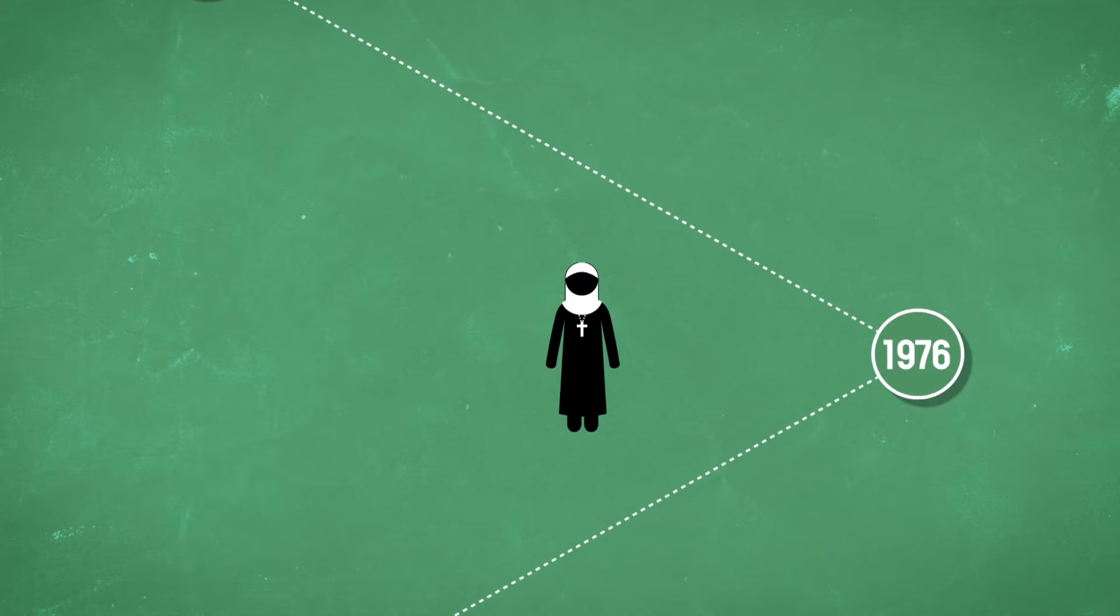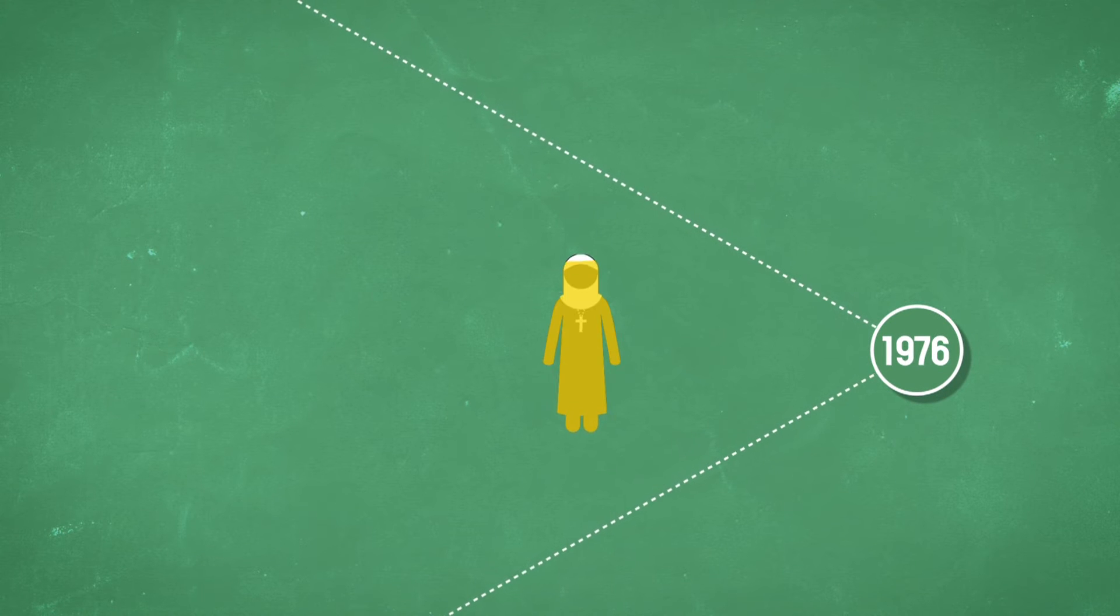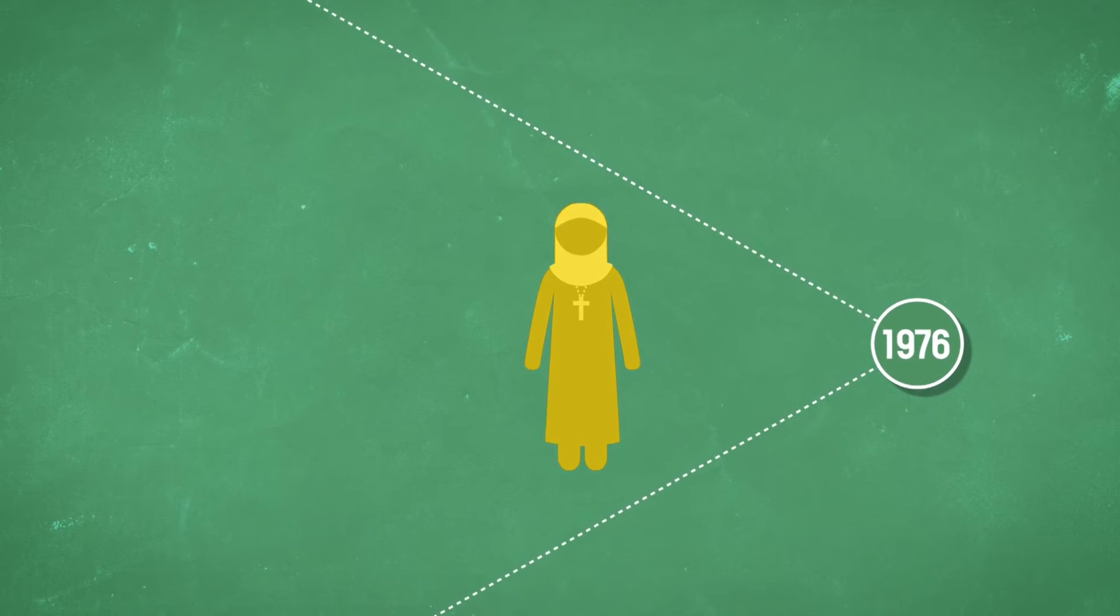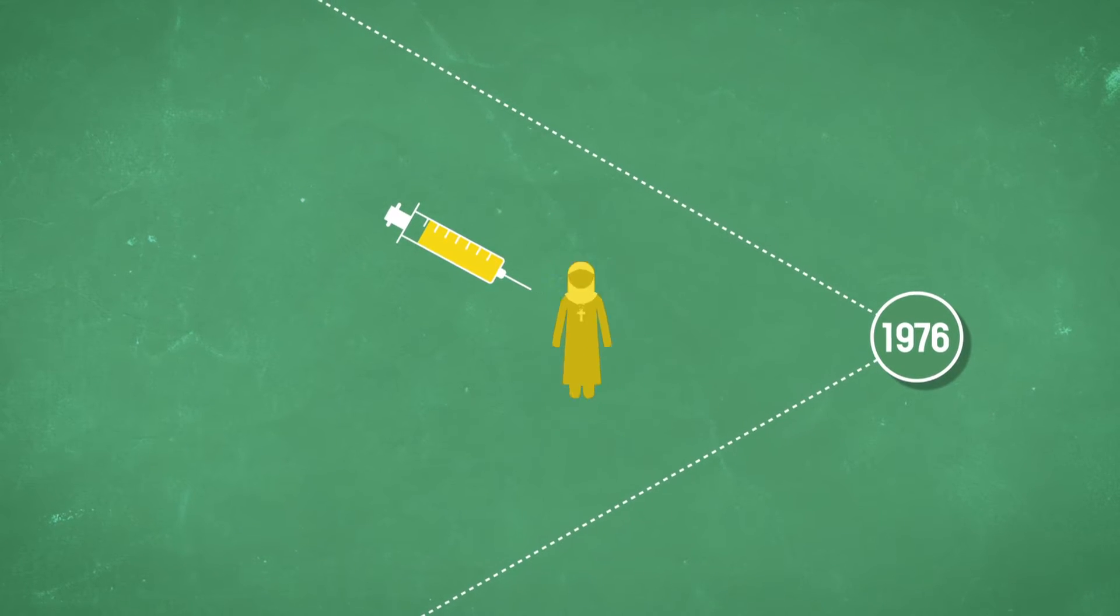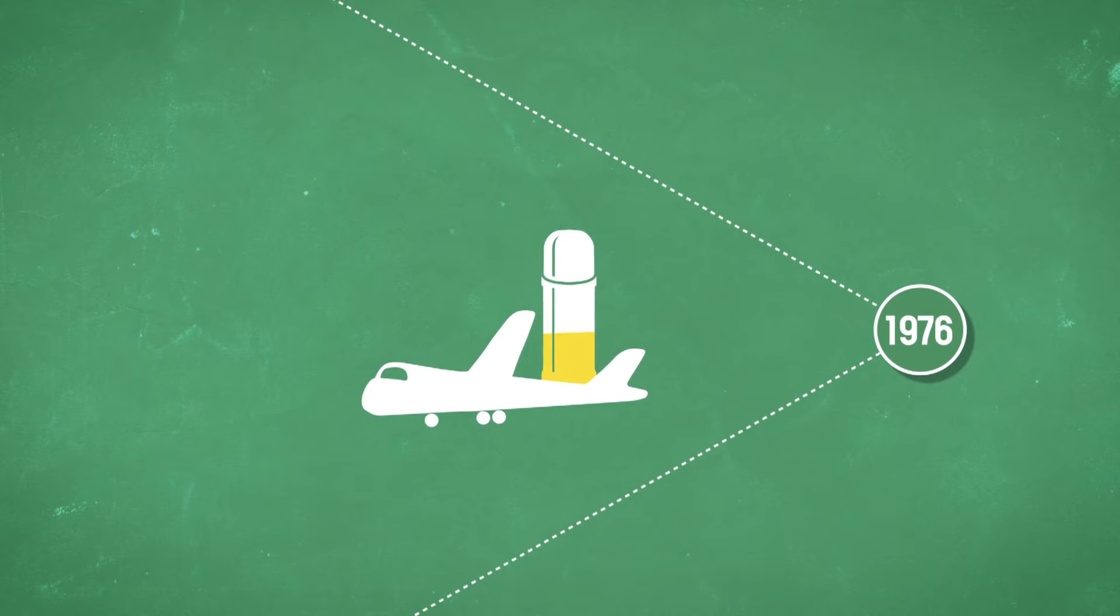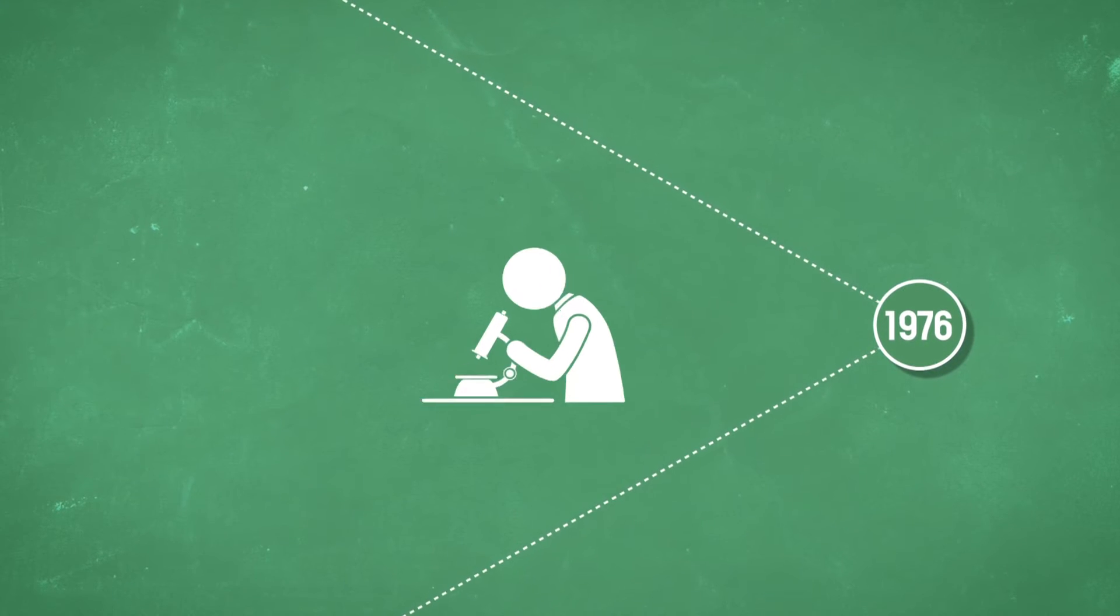The following year in 1976, a Belgian nun fell ill in Yambuku in Zaire, now Democratic Republic of Congo. A sample of her blood was sent to a laboratory in Belgium, transported and delivered by hand in just an ordinary thermos flask.